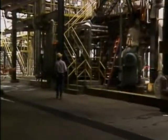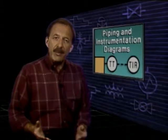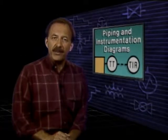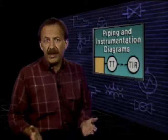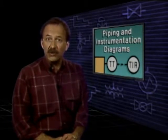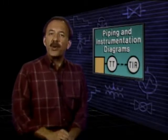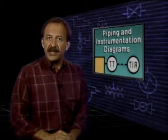On the job, you'll refer to many different types of diagrams associated with the systems in your plant. Although diagrams vary depending on the kinds of systems they represent, there are some aspects of reading them that apply to practically any diagram. A piping and instrumentation diagram, or P&ID as we'll refer to it, represents the piping and process equipment in a system and the instruments that monitor and control conditions in the system. In this part, we'll concentrate on instrument symbols used on P&IDs.